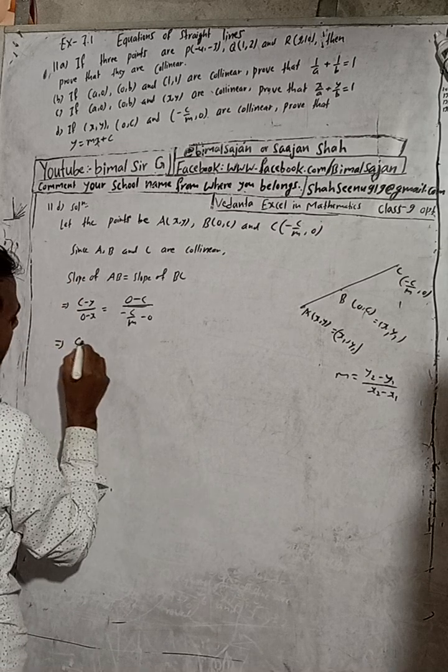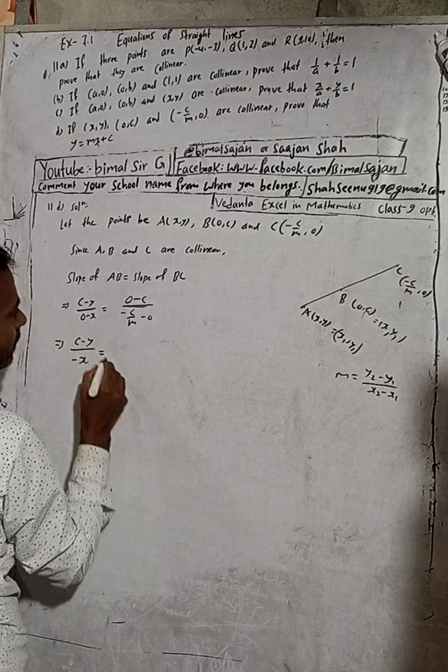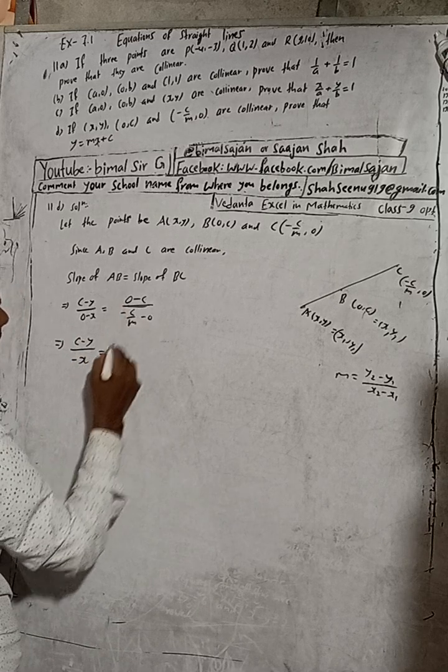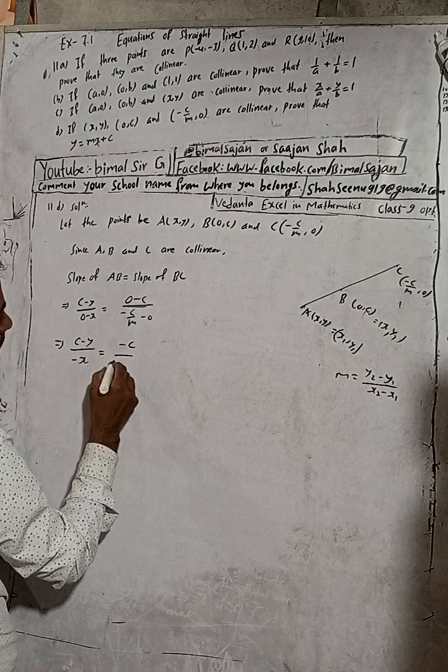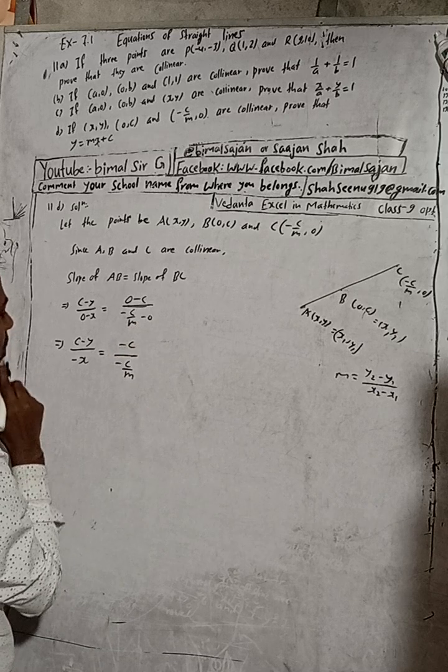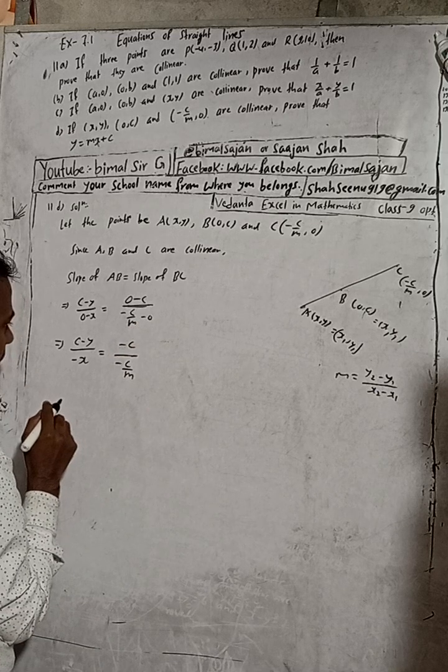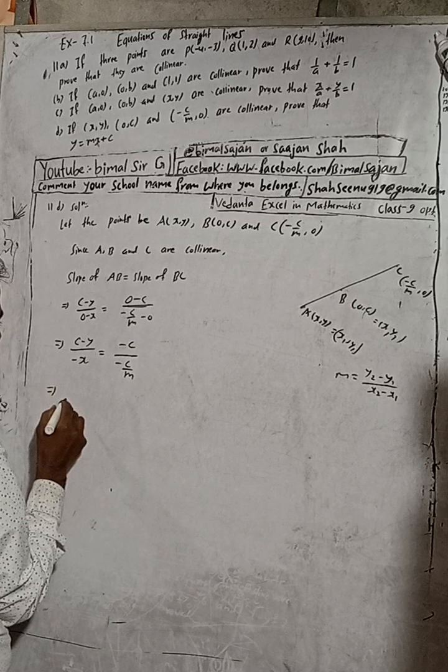This can be written as (c - y)/(-x) = (-c)/(-c/m). Now when we solve this equation: